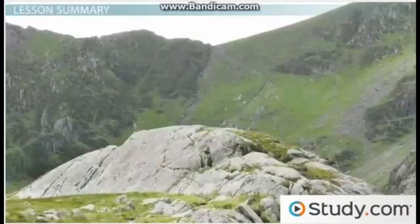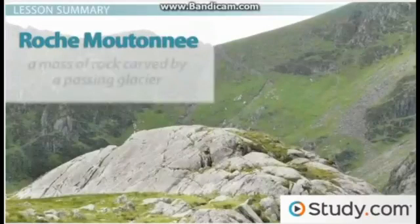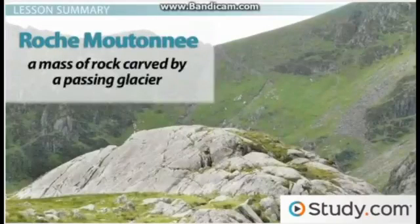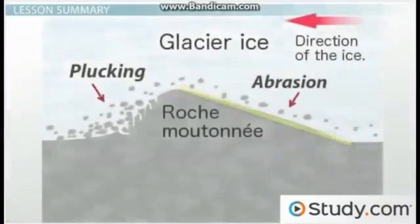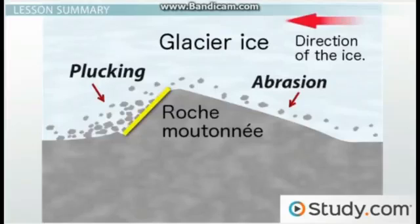Glacial erosion can also create a Roche Moutonnée, which is a mass of rocks carved by a passing glacier. The rock formation has a smooth rounded side caused by abrasion and a steep ragged side where rocks were plucked from the surface.